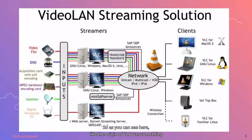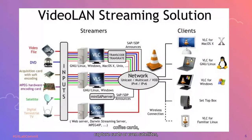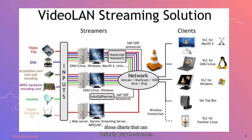The origin of VLC was something that was able to stream on a multicast network — anything from DVDs, video files, graphic cards, capture cards, or even satellite — and stream that on the network with clients that could basically play the streams. The client, Video LAN client, which became VLC, was one part of that solution.